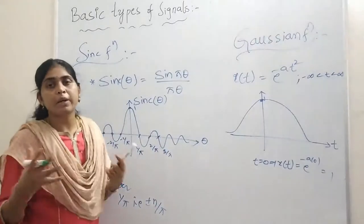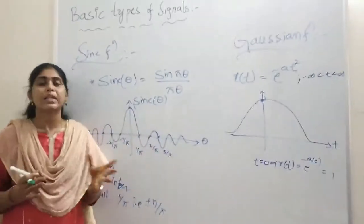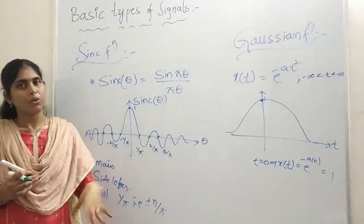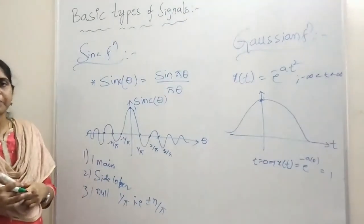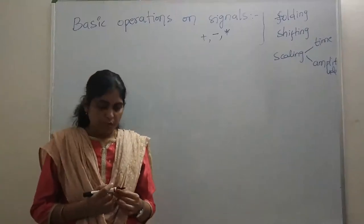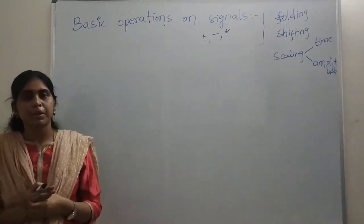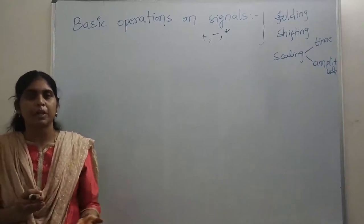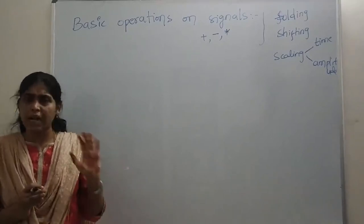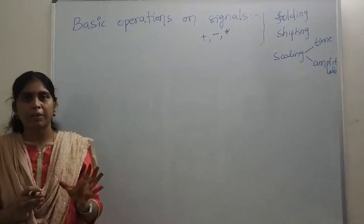These are all the standard basic types of signals. We will perform operations on all these signals and use them as inputs to systems depending on our application. To recap, we started with unit impulse, step, ramp, exponential, rectangular pulse, triangular, sinc function, and Gaussian. You must practice the standard mathematical notation and graphical representation of all these signals.